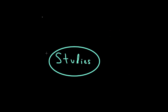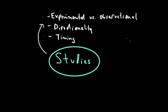In our last video, we talked about the different general properties of studies: experimental versus observational studies, talking about directionality — whether they're forwards or backwards — and their timing, whether it's a prospective or a retrospective study.